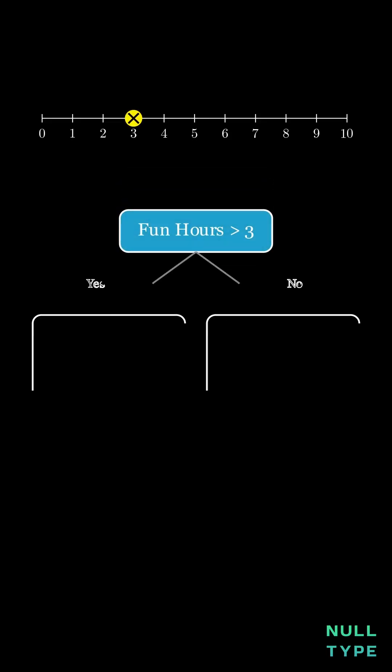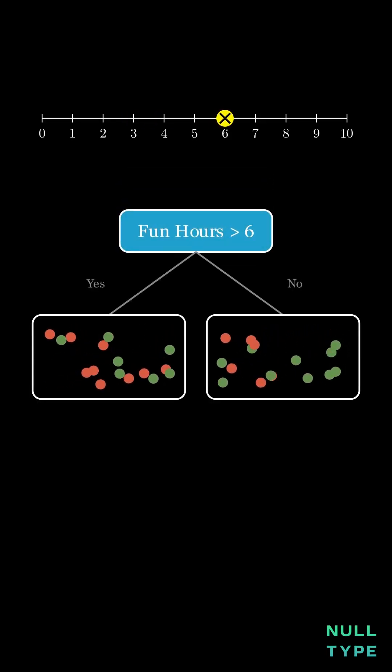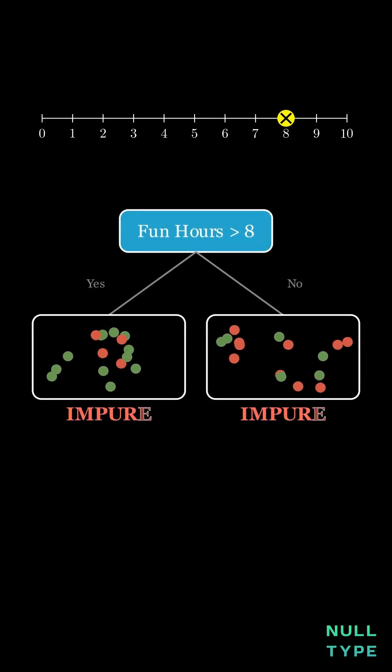So what should the tree ask first? Study hours, fun hours, or past results? It tries every question to cleanly split red and green. Let's test fun hours. No matter where we split, the dots stay mixed and impure split.